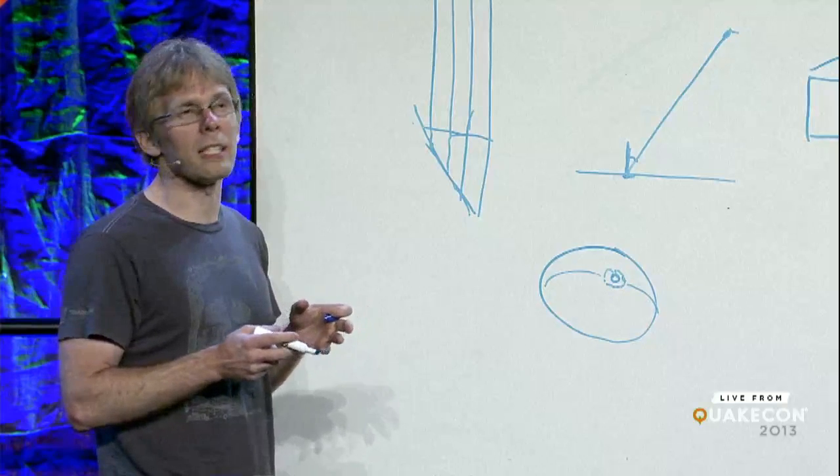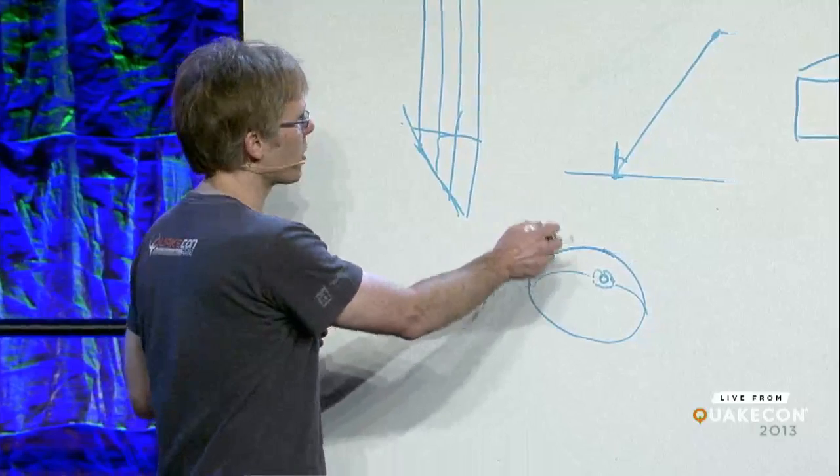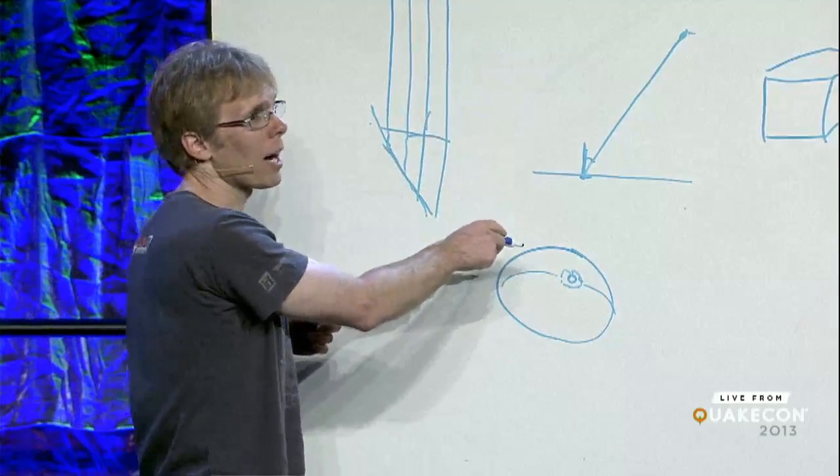But more or less, that's still today what a lot of graphics involves is you've got a roughness parameter, which affects this exponent that you take, this extra vector to generate your specular highlights for.